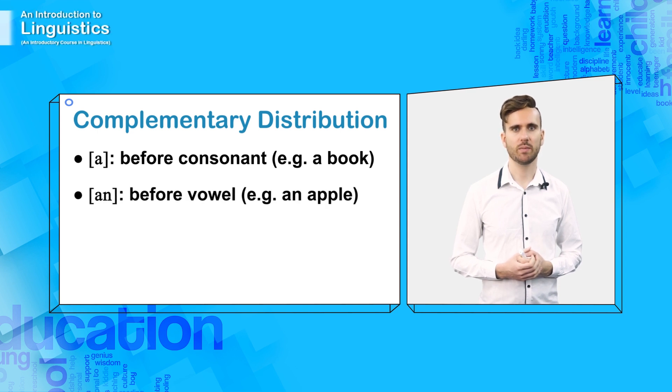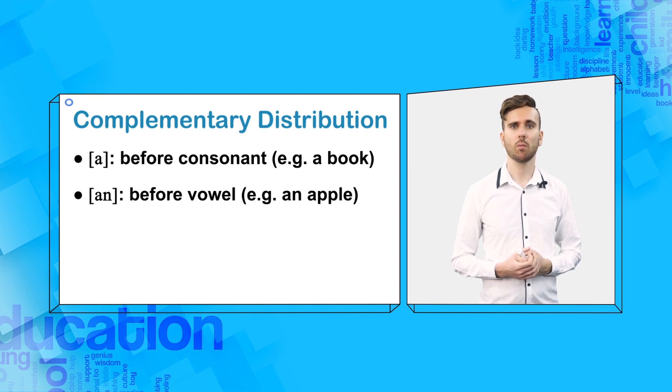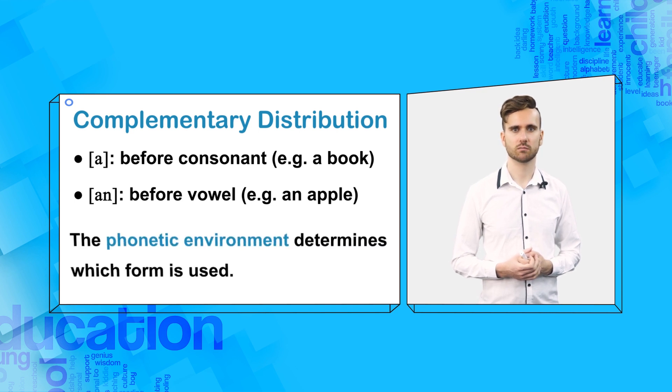Secondly, if the word begins with a vowel, the indefinite article is an. For example, an apple. These two allomorphs are in complementary distribution because a can never be before a vowel and an can never be before a consonant. Therefore, the phonetic environment limits or controls where these allomorphs can be used.